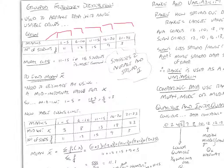Here we have eleven students who got between one and five, twelve got six and ten, fifteen and so on. Now, what is the modal class? What's the modal average? Well, the mode is the most frequent. The most frequent group is fifteen, so between eleven to fifteen marks is the most common because fifteen students got that.